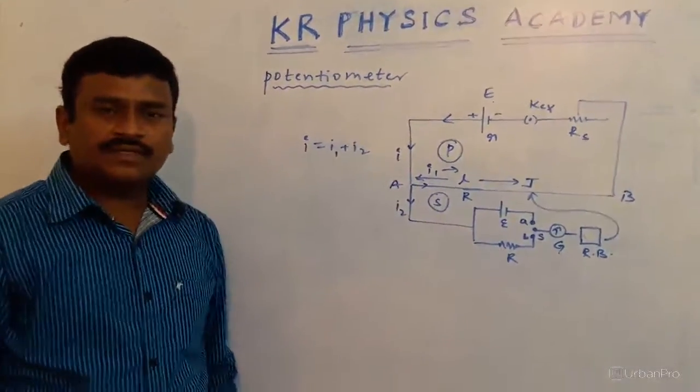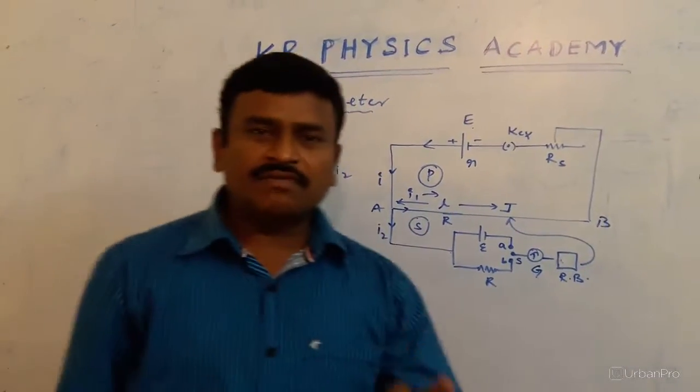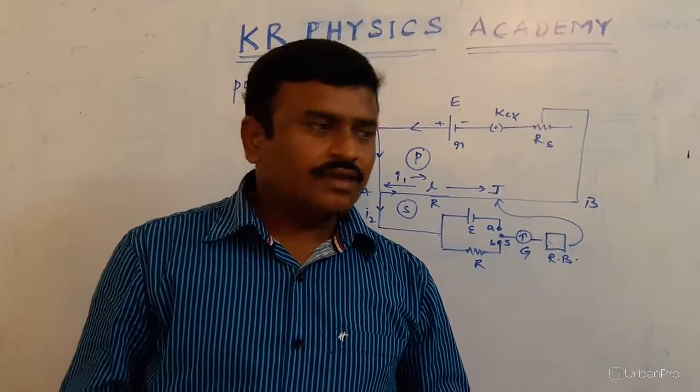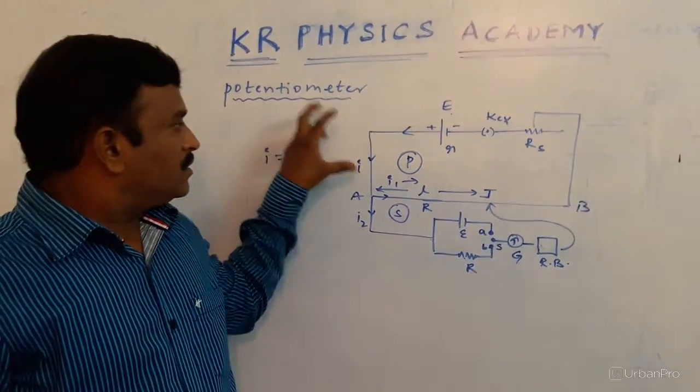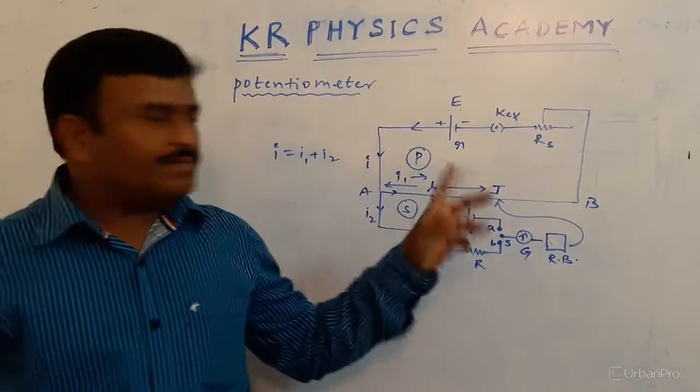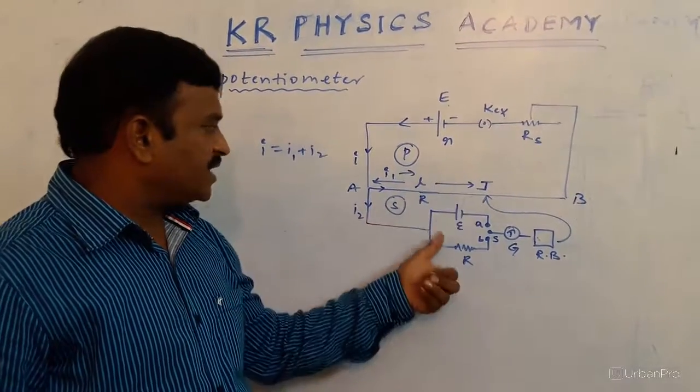Potentiometer is a device which is used to determine the EMF of the given cell. It is consisting of mainly two parts: primary circuit and secondary circuit.